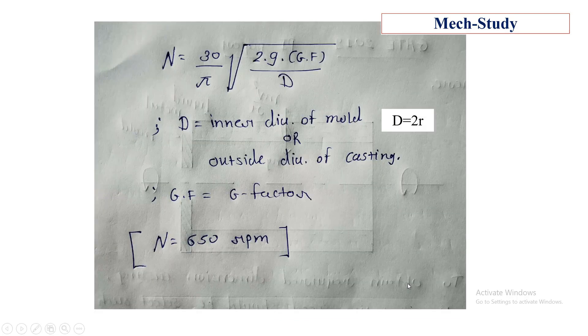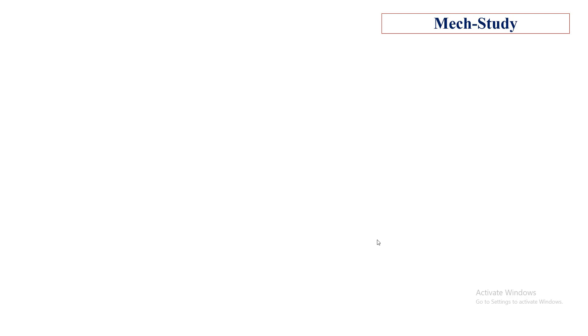By simply substituting all these values, we got minimum required rpm is equal to 650 rpm, required to get suitable dimension casting. Subscribe this channel if you want to see more interesting concepts. Thank you very much.